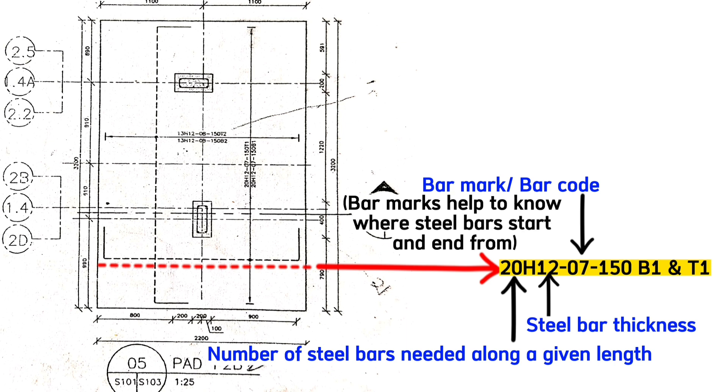For example, consider a slab with different steel bars taking different directions. Without codes, it would be a mess and difficult to understand. This 150 millimeters means the spacing from one steel bar to another, center to center.